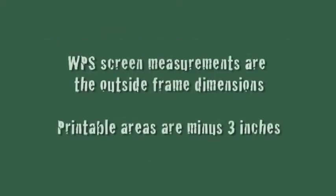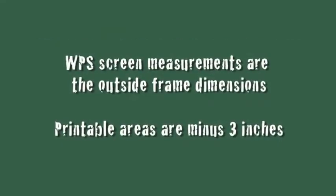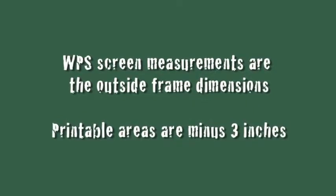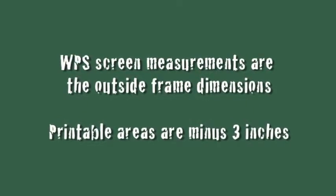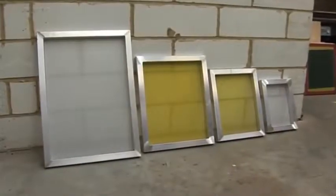The mesh counts can range from 15T which would be used for glitter printing or highly absorbent surfaces to a 200T which would be used for extremely fine detail. We have chosen a yellow 43T mesh today, although white would be fine also. We have picked a 20 by 24 inch screen as our logo fits nicely inside with 2 to 3 inches either side, which is a nice amount of room for our squeegee.